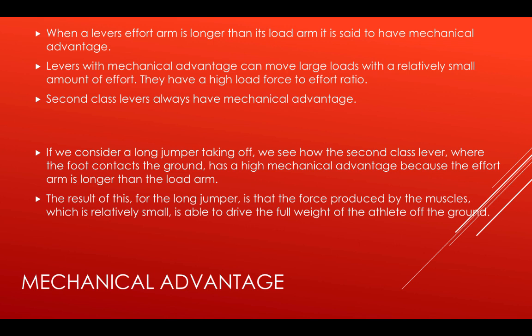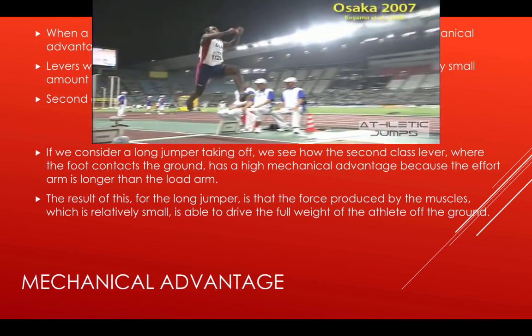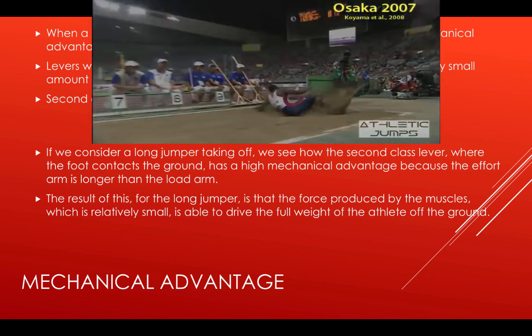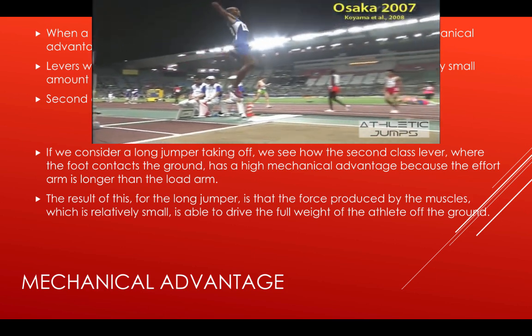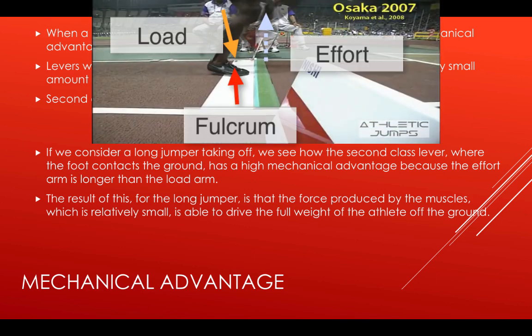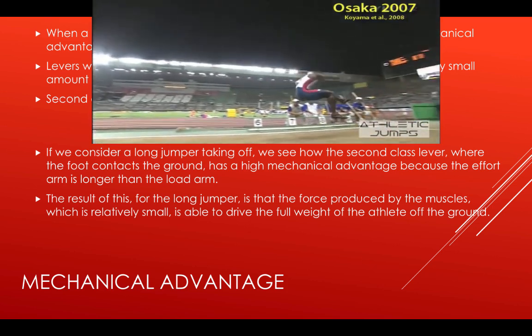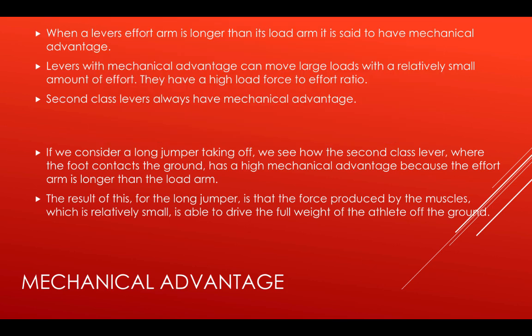Second class levers always have a mechanical advantage. If we consider a long jumper, we see how the second class lever — where the foot contacts the ground — has a high mechanical advantage because the effort arm is longer than the load arm. The result of this for the long jumper is that the force produced by the muscles, which is relatively small, is able to drive the full weight of the athlete off the ground.